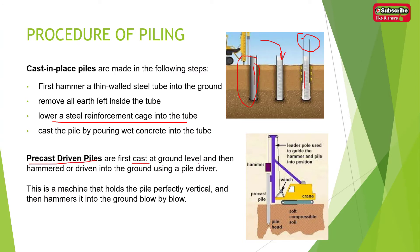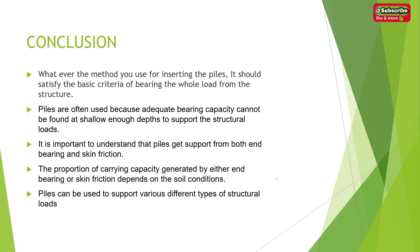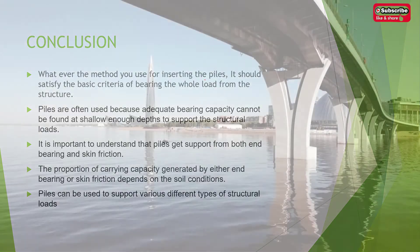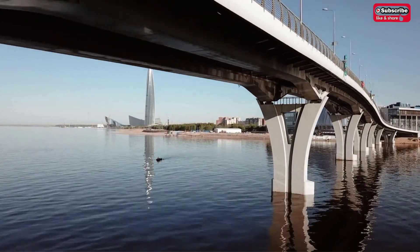For precast driven piles, these are cast at ground level and then hammered or driven into the ground using a pile driver. As you can see in the picture, the machine holds the pile perfectly vertical and then hammers it into the ground blow by blow.